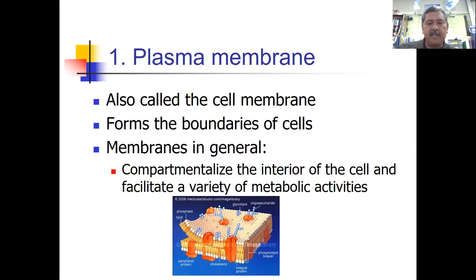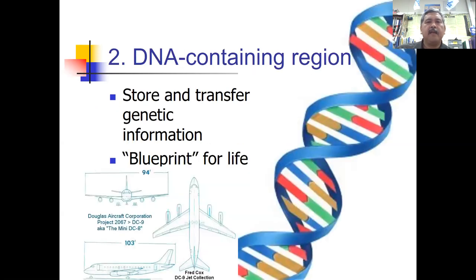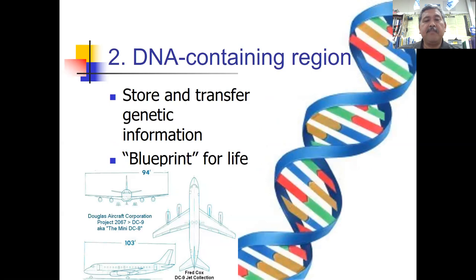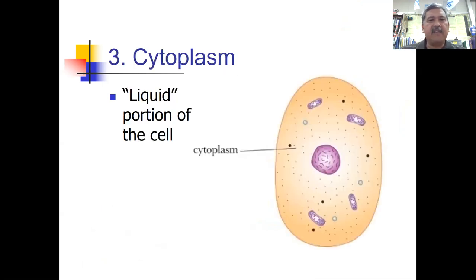Living things have a DNA-containing region — the part where they store and transfer genetic information. DNA is the genetic blueprint for living things. All of the information needed to be a human is locked up in our 46 chromosomes. There are 25,000 to 30,000 different genes that make up a human, so all that information is in the DNA.